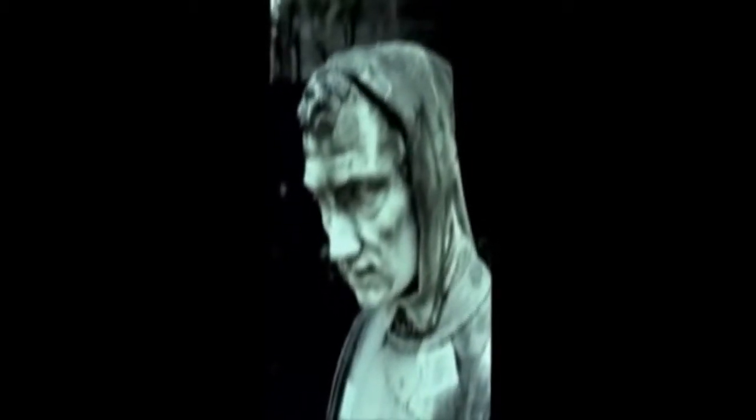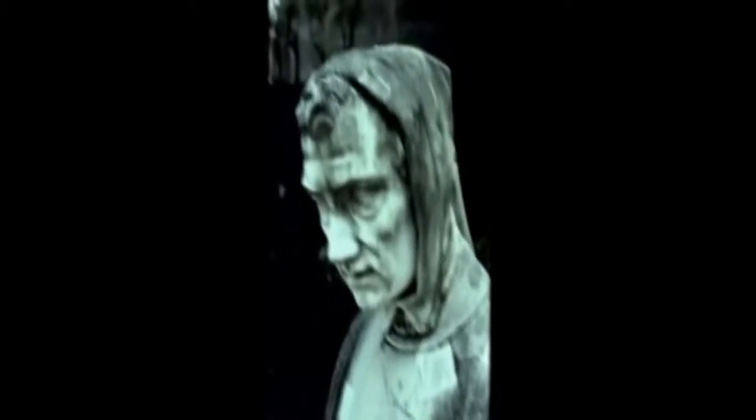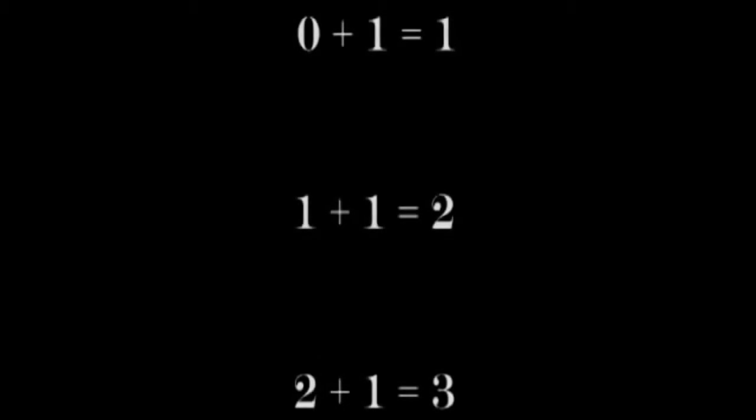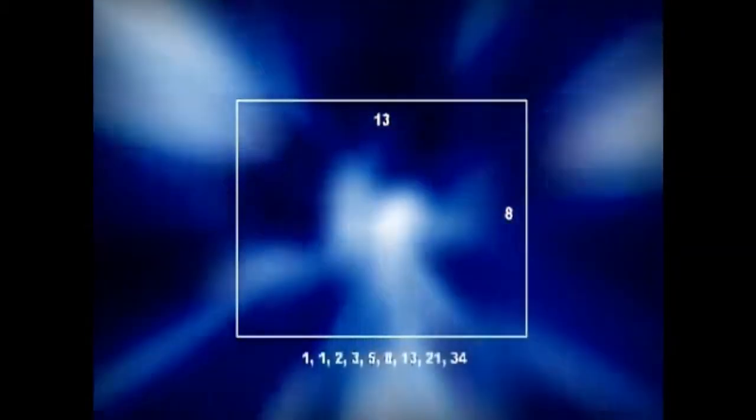Around 1200 AD, a man named Leonard Pisano, better known as Fibonacci, discovered a sequence of numbers that created a very interesting pattern. The sequence begins with the numbers 1, 1, 2, 3, 5, 8, 13, 21, 34, and continues indefinitely. Each number is obtained by adding the last two digits together.